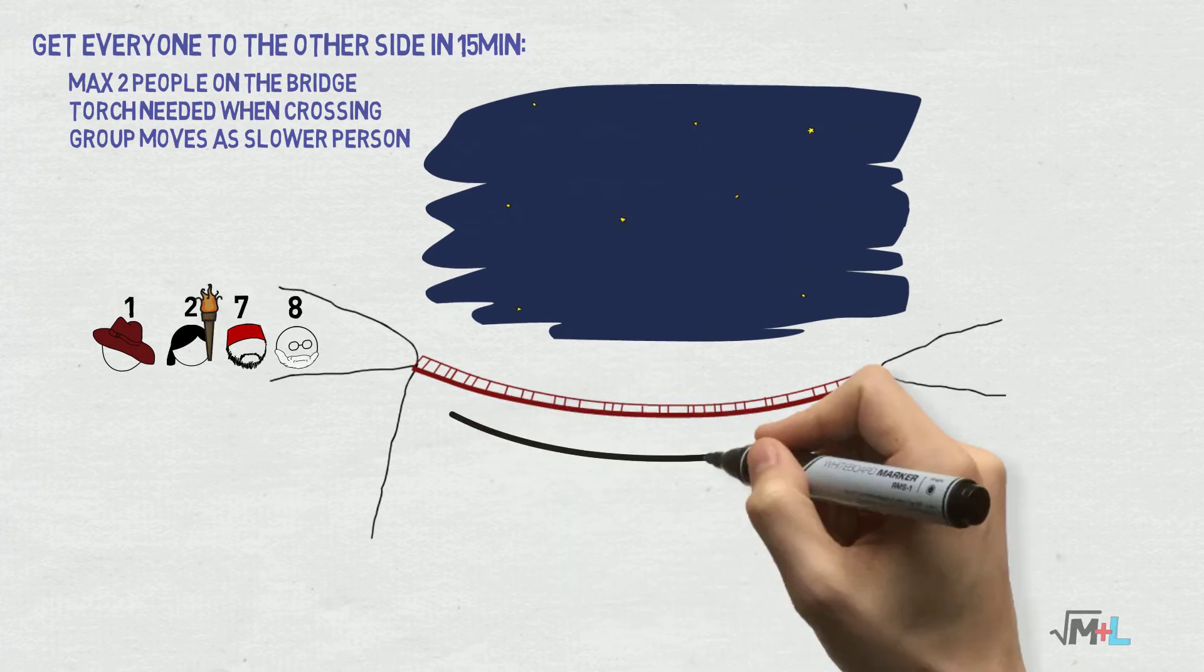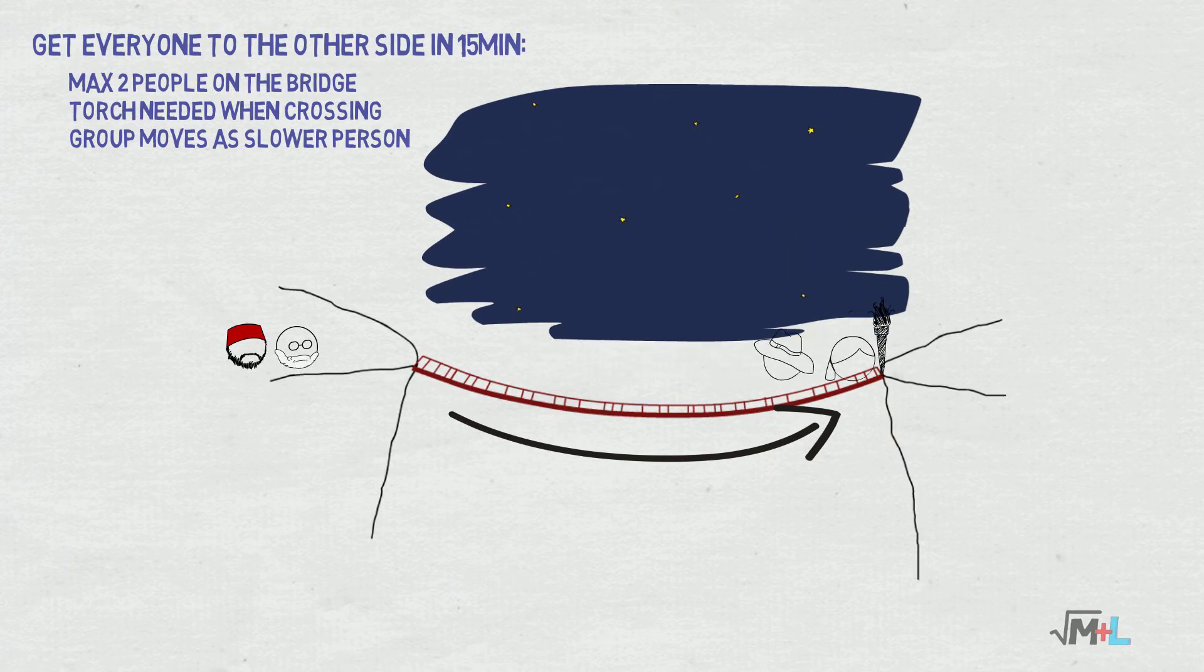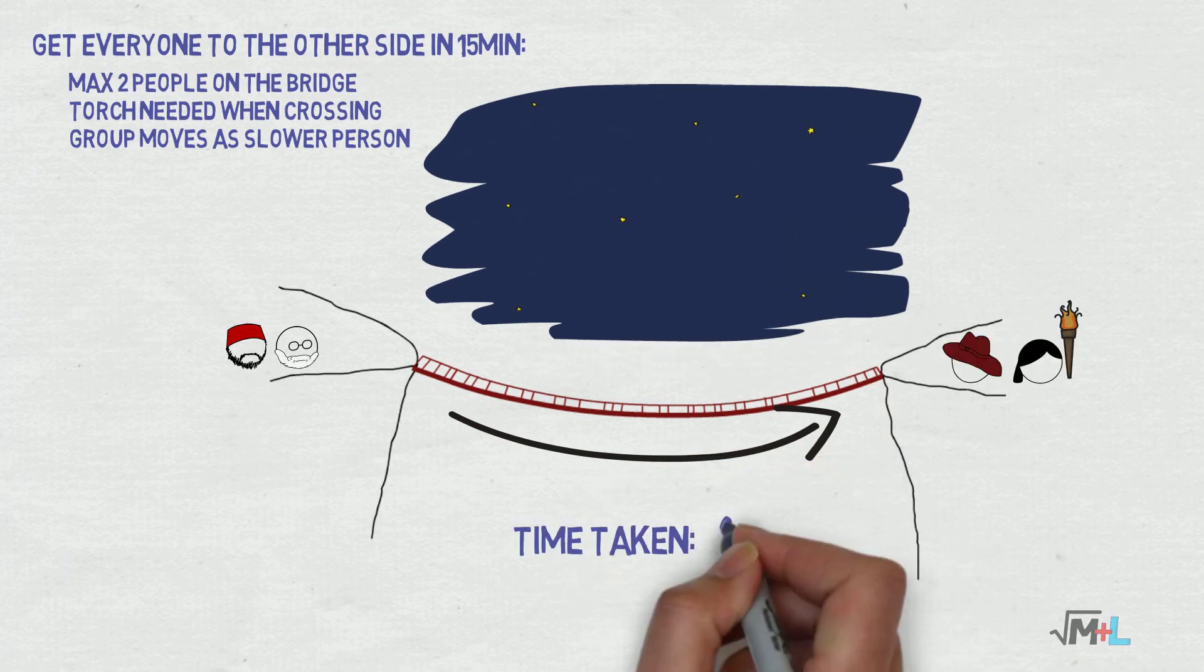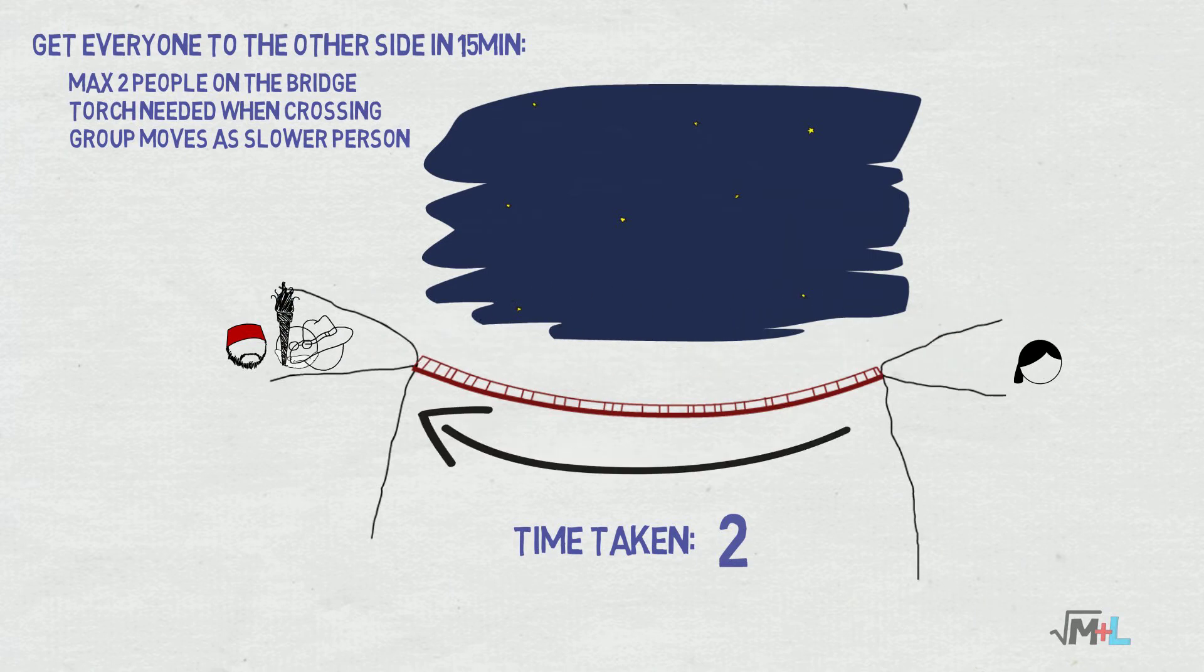First, Indiana and Marion take the torch and quickly get to the other side. It takes two minutes. Then Indiana springs back in one minute, so total time is three.